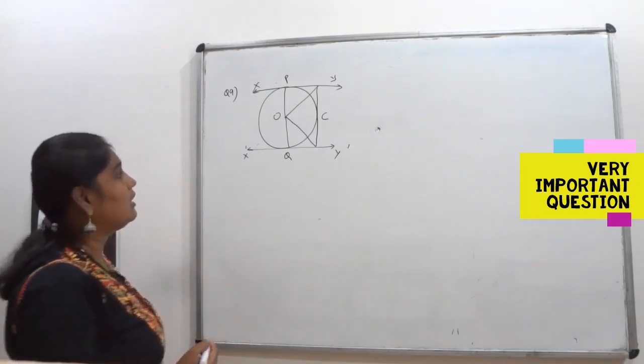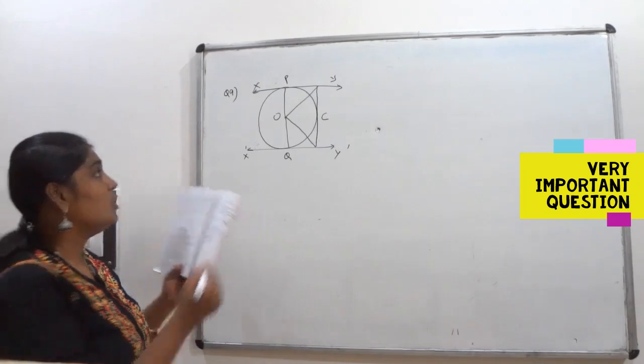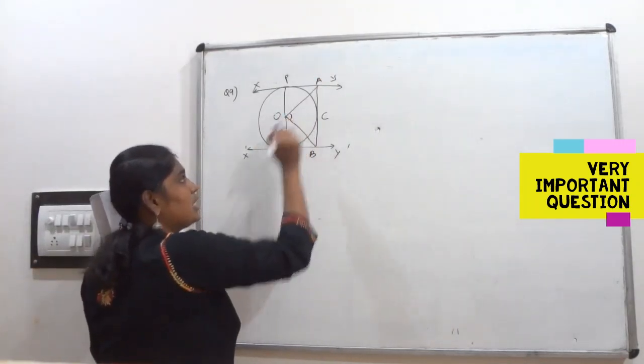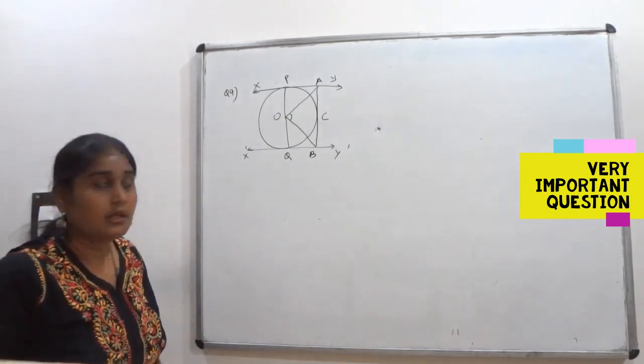I am going to prove that angle AOB equals 90 degrees. So angle AOB is what? This angle you are going to prove is 90 degrees in the given figure.